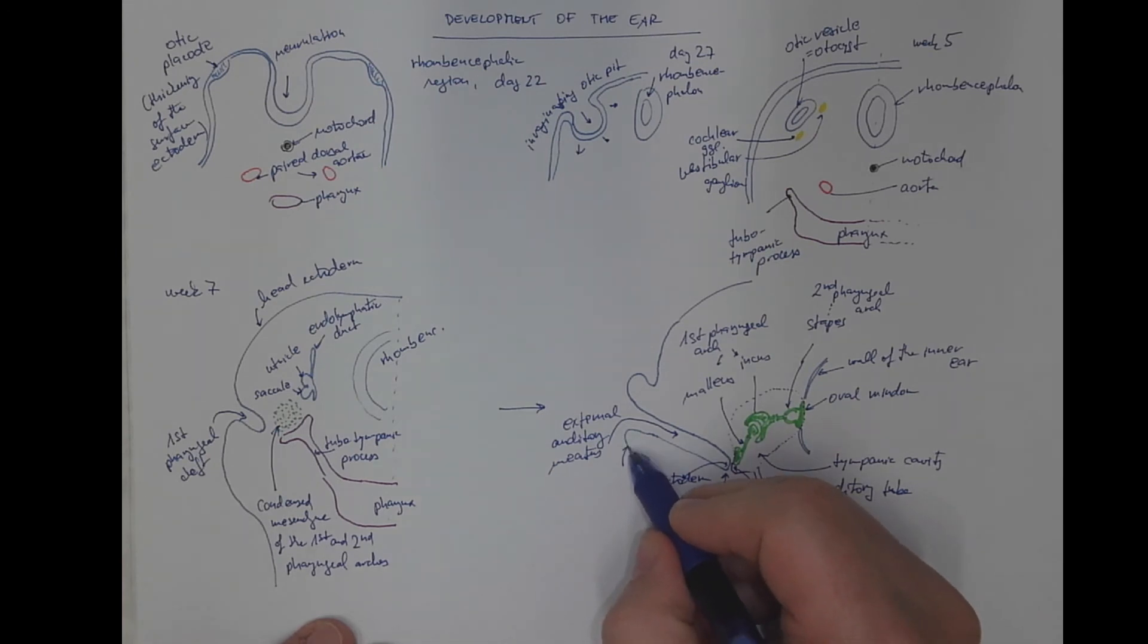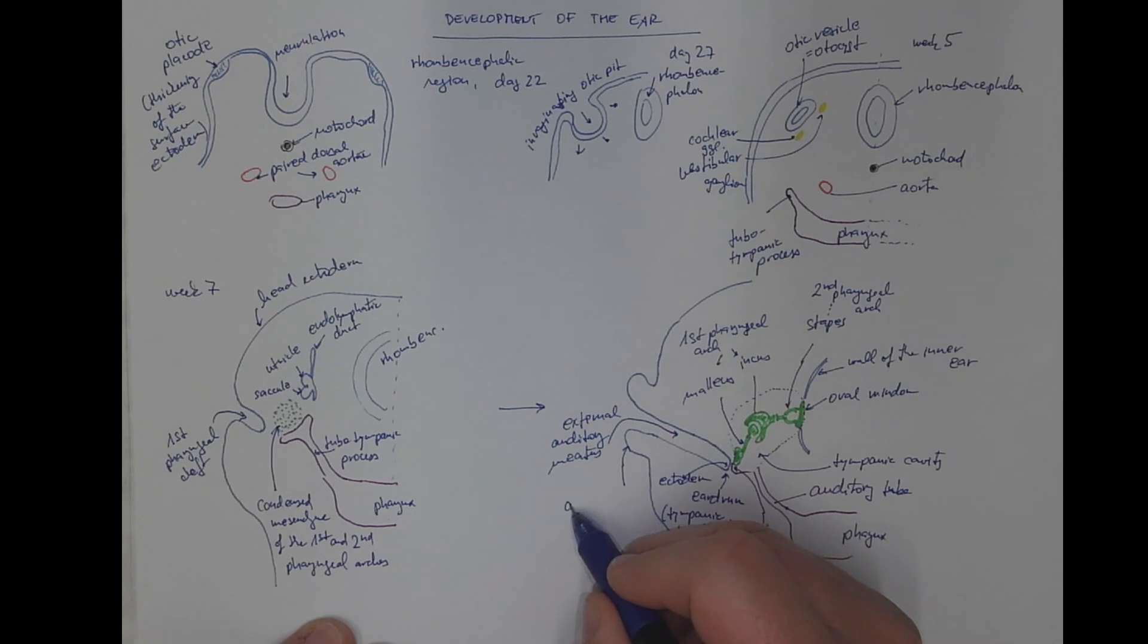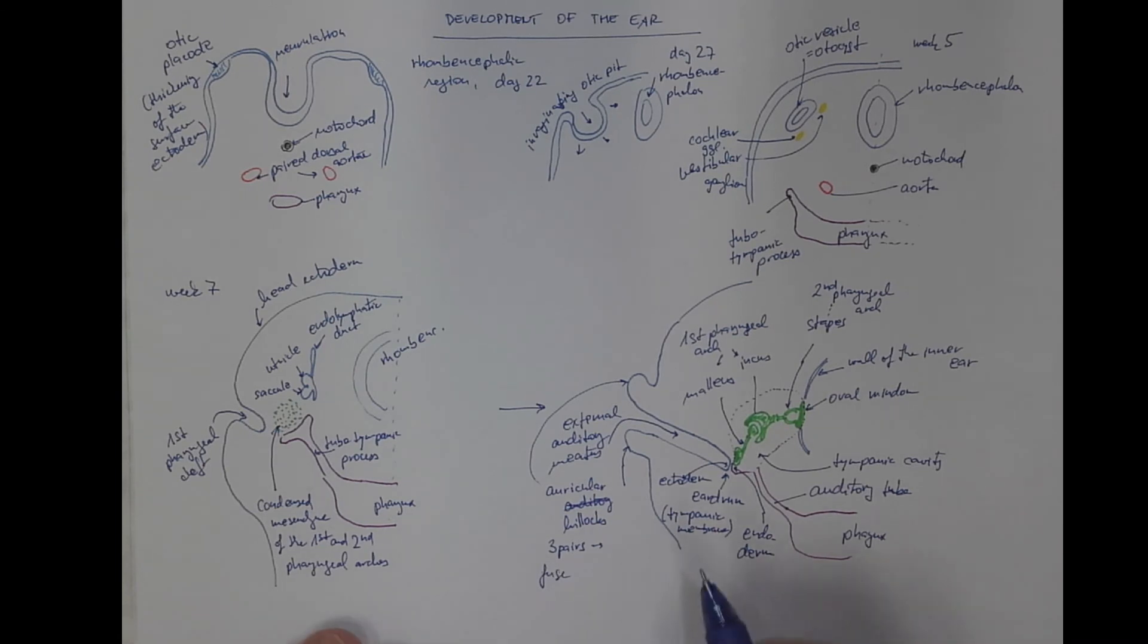These projections are the auricular hillocks. They are above and below the external auditory meatus. There are three pairs originally of these, but they fuse to form the auricle, the pinna, the external ear. Hence the morphological variability of the pinna, which originates by fusion of the three pairs of auricular hillocks.